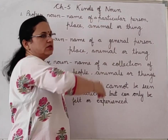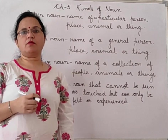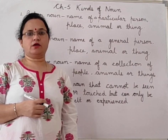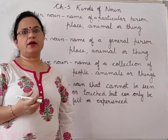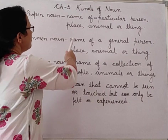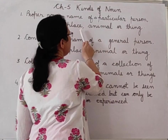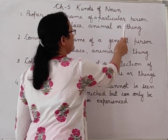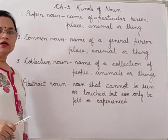Name of animals — so if you talk about your pet dog, its name is a proper noun. So when we talk about a particular person, place, animal or thing, it is proper noun.